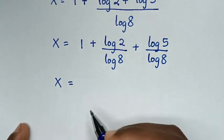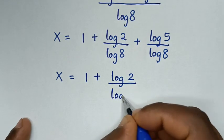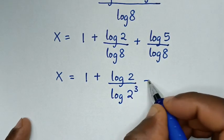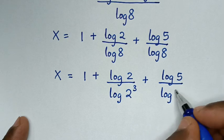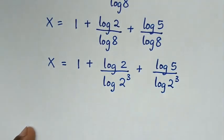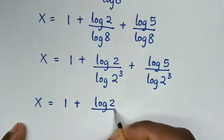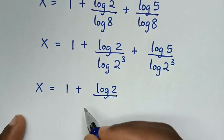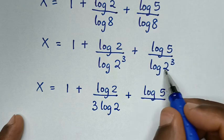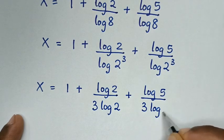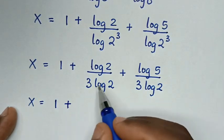So it will be x is equal to 1 plus log of 8 — it will be log of 8, it is same as 2 power of 3 — plus log of 5 over log of 8, it is same as 2 power of 3. Then it will be x is equal to 1 plus log of 8 over log of 8. This power of 3 will move to the base, so it will be 3 log of 8. So it will be 3 log of 8.